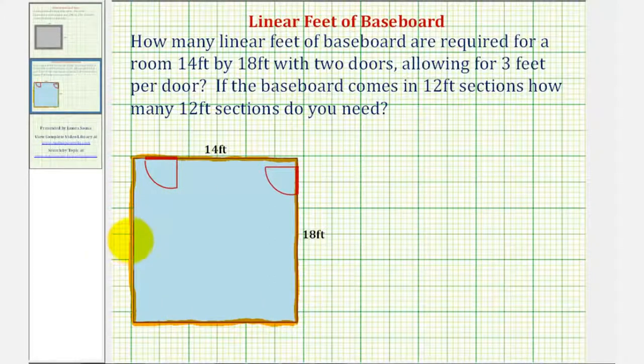But this would be too many linear feet because we don't need baseboard in the openings of the door, which we're told are three feet wide. So we'll find the perimeter and then subtract out three for this door and subtract out three for this door.